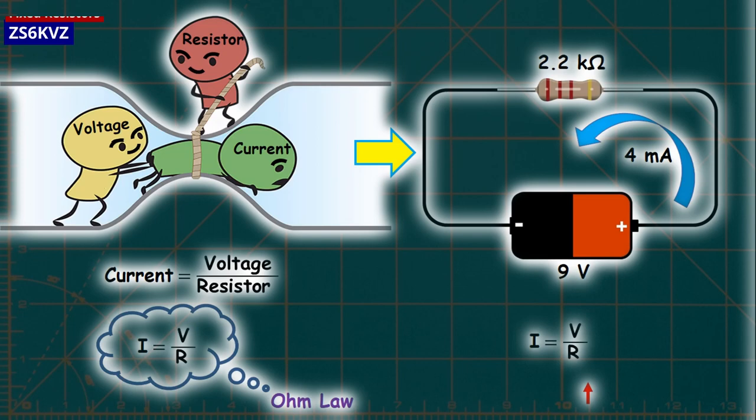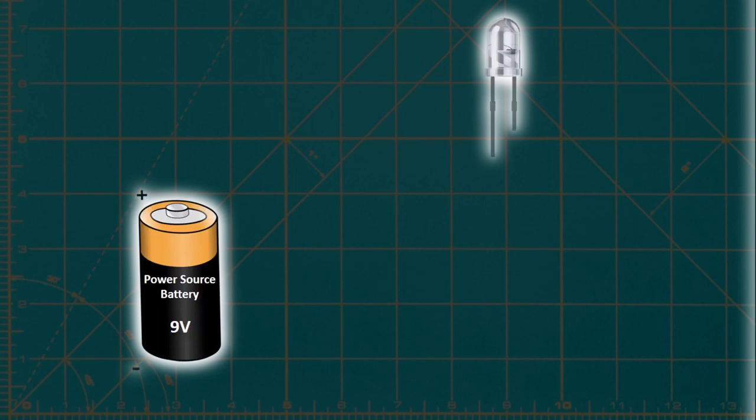If the resistor's value increases, the current value decreases because resistance and current intensity are inversely proportional. Now let's examine how to use a fixed resistor circuit.